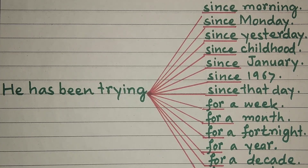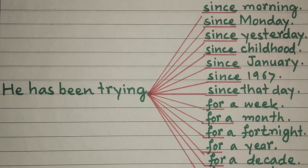Agar aap yeh kehna chahte hain: 'Woh ek hafte se koshish kar raha hai' — he has been trying for a week. For a week ek hafte se, for a month ek mahine se, for a fortnight 15 din, for a year, for a decade, for a century. Dear students, make sentences of this type and practice. Goodbye, Allah Hafiz.